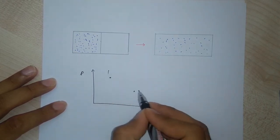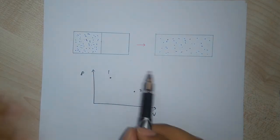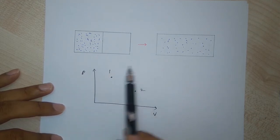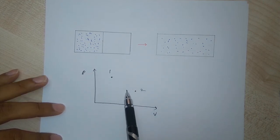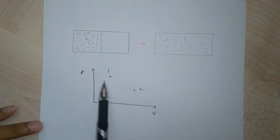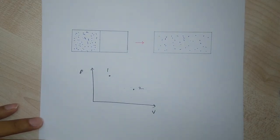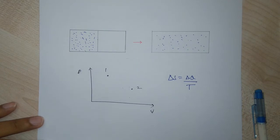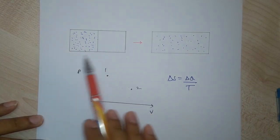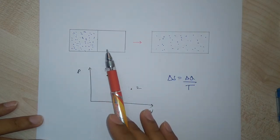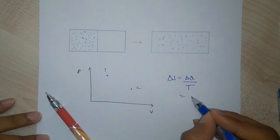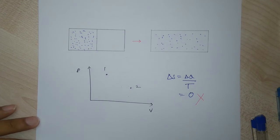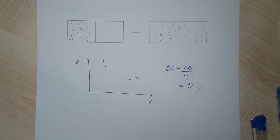These plotted states on the PV diagram are equilibrium positions; intermediate states cannot be plotted. What is the change in entropy when the gas goes from state one to state two? We know the change in entropy equals heat supplied divided by temperature. But since this is a completely isolated system, no heat flows in or out, so it might seem the change in entropy is zero.